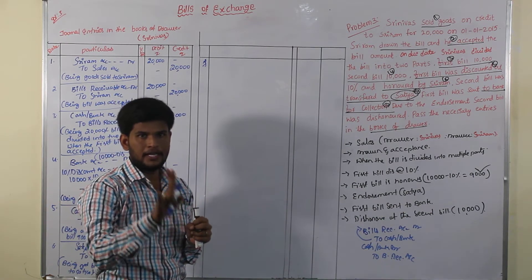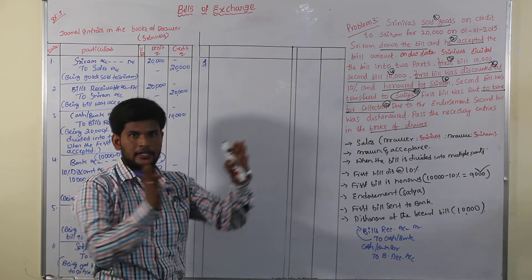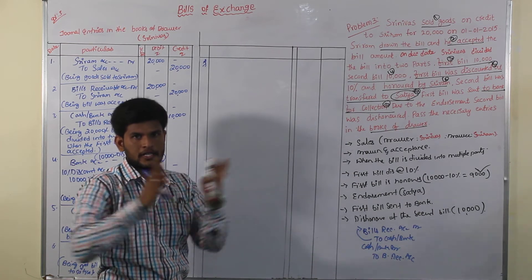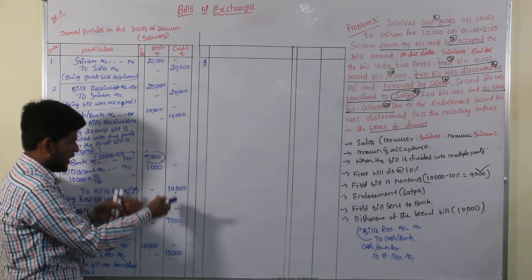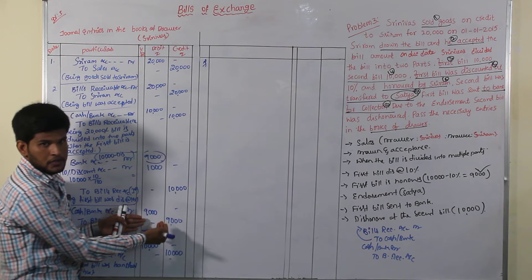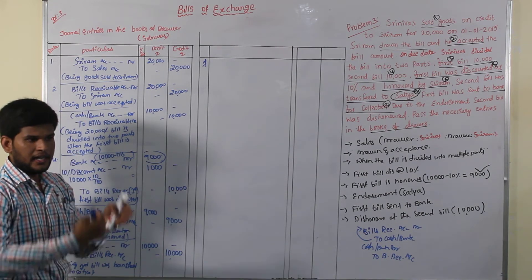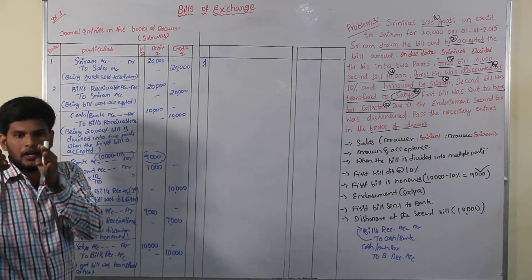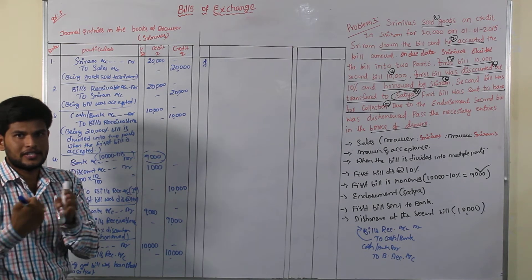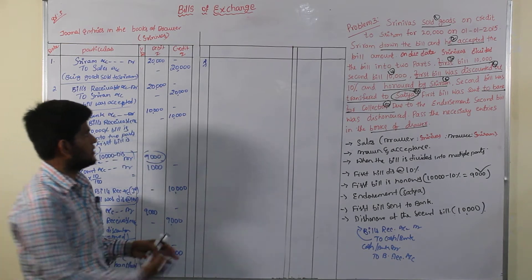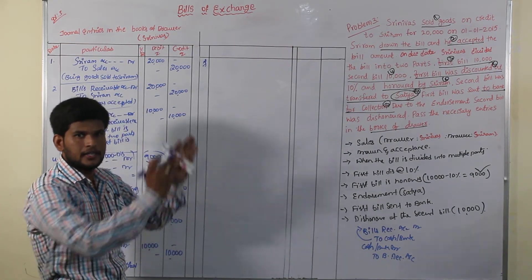One bill is divided into two sections. The first bill is 10,000 and the second bill is 10,000. One must be discounted and the other is endorsed. After the bill is ordered, it is sent for collection. Sent for collection is also part of two types of entries.